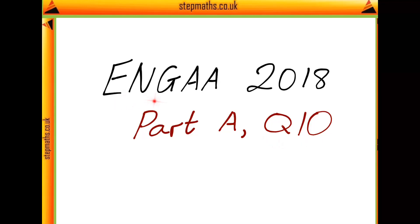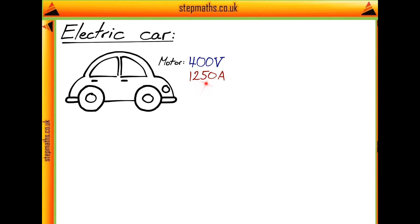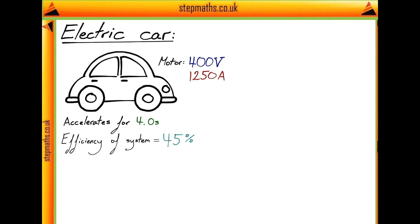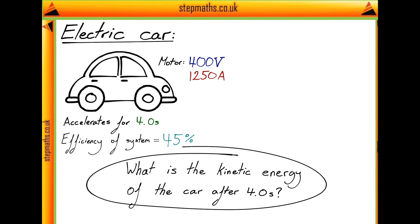Here we're going to look at question 10 of the Enger 2018 paper. In this question we have an electric car with a motor which has a potential difference across it of 400 volts and a current through it of 1250 amps. We're then told that the car accelerates for 4 seconds, the efficiency of the whole system is 45%, and we're asked: what is the kinetic energy of the car after 4 seconds?